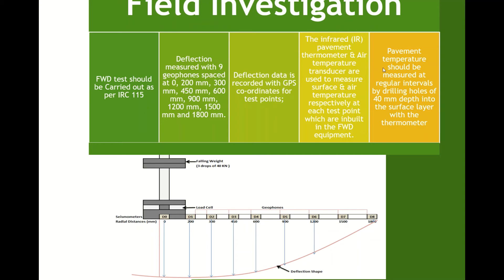Pavement temperature should be measured at regular intervals by drilling holes of 40 mm depth into the surface layer using a thermometer. This is very important — just like in Benkelman Beam Deflectometer, we have to apply temperature corrections here as well. So measuring pavement temperature is one of the important things to consider during any field investigation.